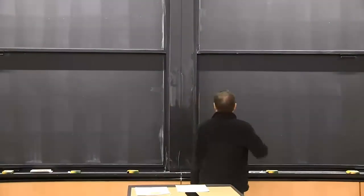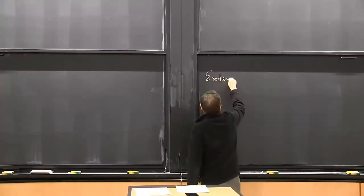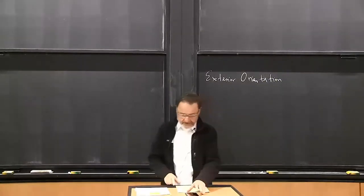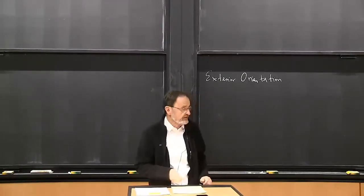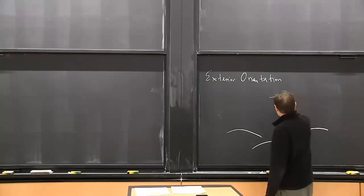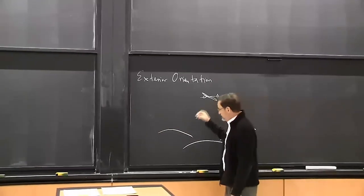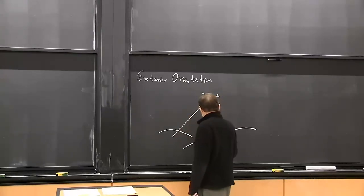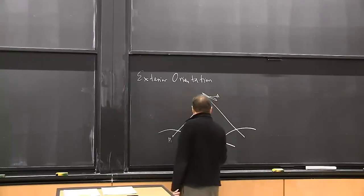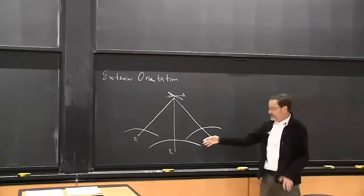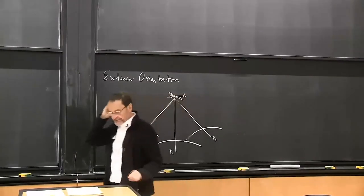We'll briefly talk about exterior orientation, which is the fourth of the photogrammetric subjects we're covering. This is best illustrated by thinking about a drone flying over some terrain of which we have a detailed model, so we know where points are in some global coordinate system. We have a camera with perspective projection and we get images of three points. The question is: where are we?